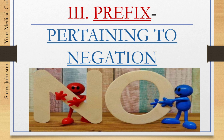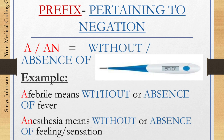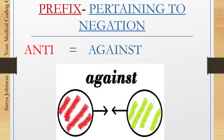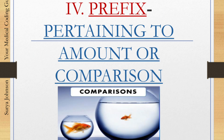We'll move on to prefixes pertaining to negation. Negation means denial of something — you say no or you disapprove. Number one: the prefixes 'a' or 'an' mean without or absence of. For example, afebrile means without or absence of fever. Anesthesia means without or absence of feeling or sensation — they don't feel that sensation. Number two: the prefix 'anti' means against. Example: antitoxin means against toxin or against poison.